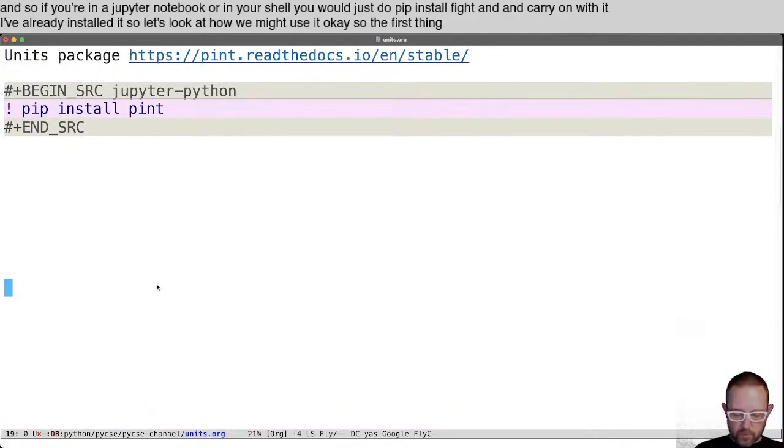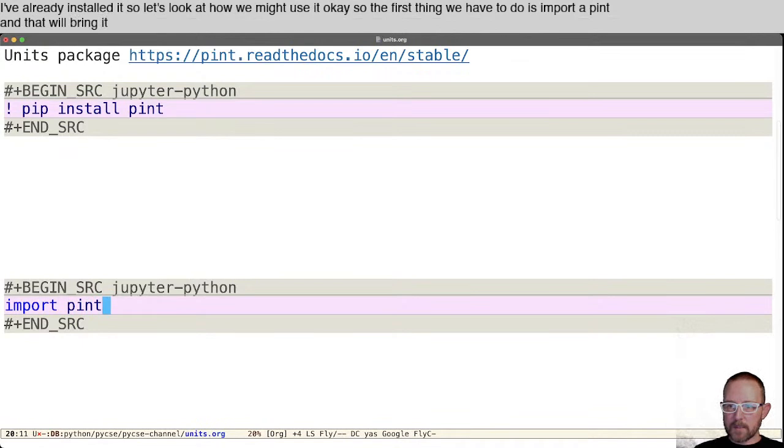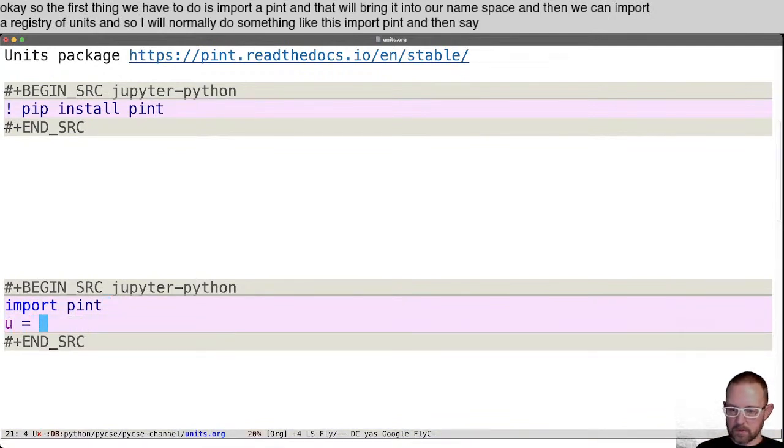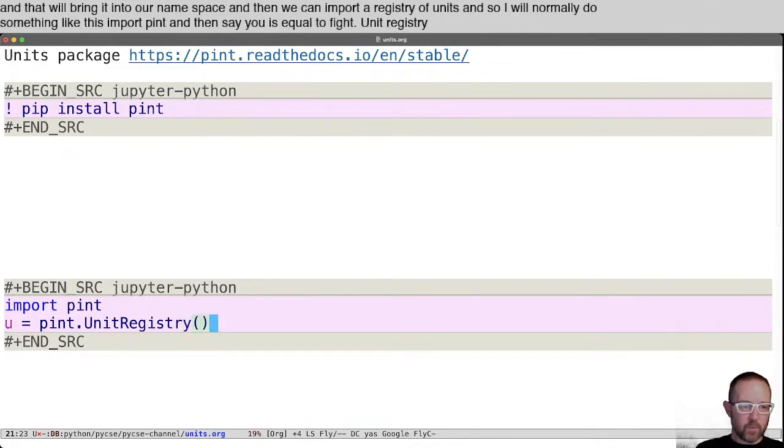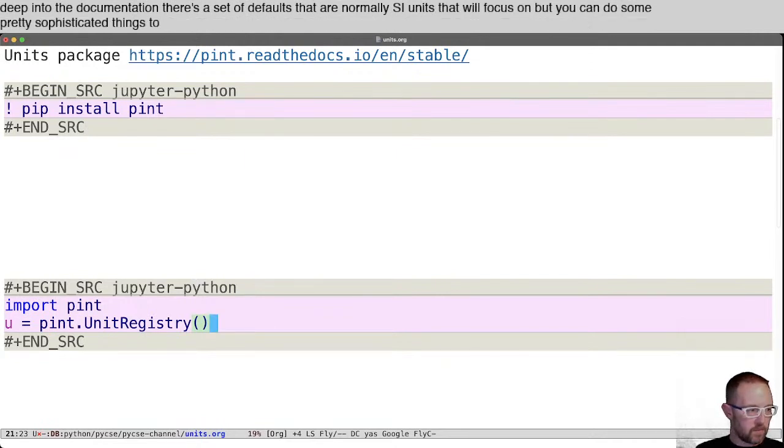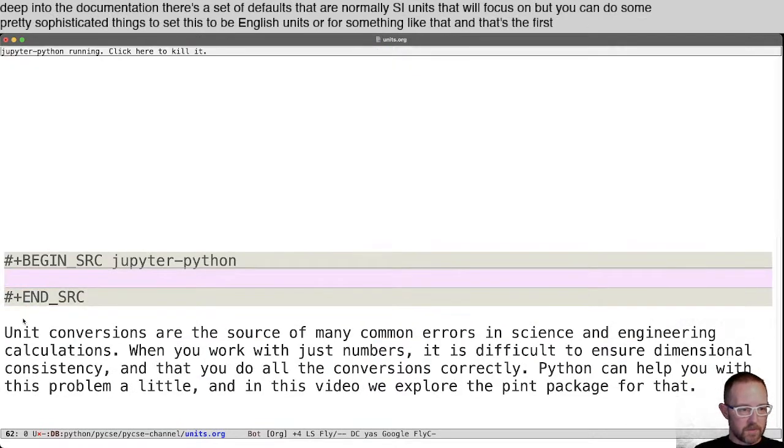Okay, so the first thing we have to do is import pint. And that will bring it into our namespace. And then we can import a registry of units. And so I will normally do something like this import pint, and then say u is equal to pint unit registry. And this is where you went if you dig deep into the documentation, there's a set of defaults that are normally SI units that we'll focus on. But you can do some pretty sophisticated things to set this to be English units or something like that. And that's the first first thing that we're going to do.